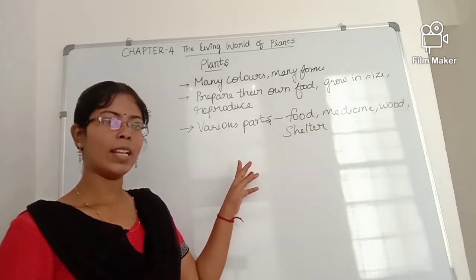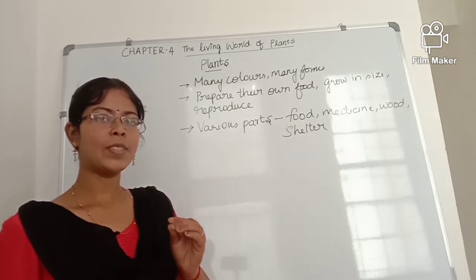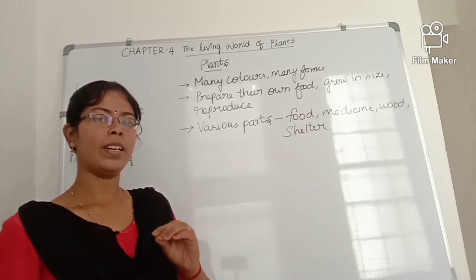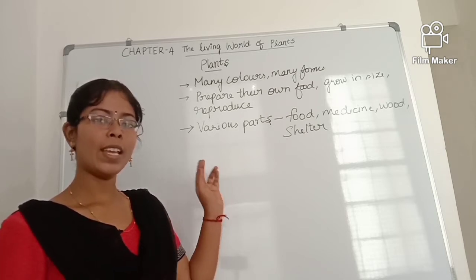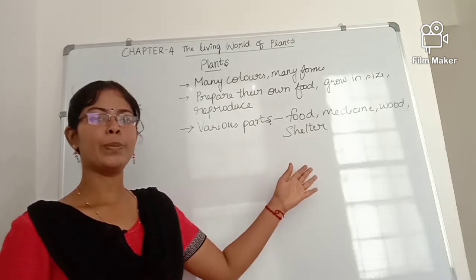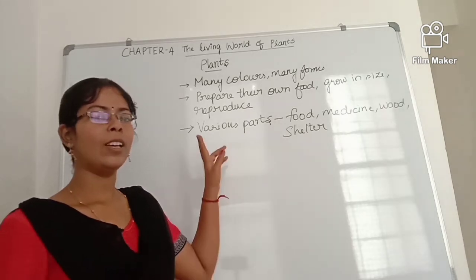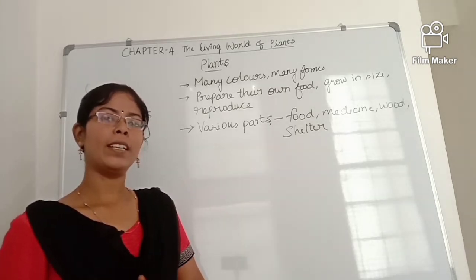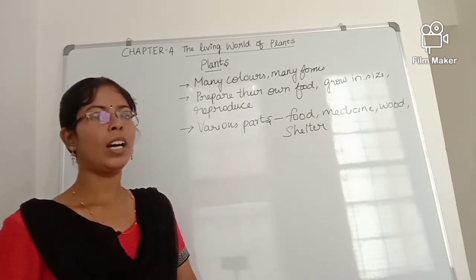Various parts of plants are used as food — like fruits, vegetables, and leaves. Various parts of the plants are also used as medicine. We use plants to cook food, to make furniture, and various parts of the plants are used as shelter. Plants are homes for many birds and animals.